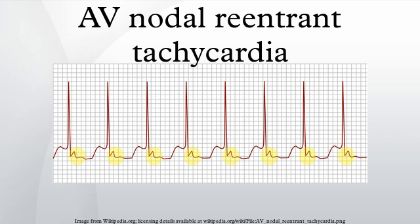AVNRT occurs when a reentry circuit forms within or just next to the atrioventricular node. The circuit usually involves two anatomical pathways, the fast pathway and the slow pathway, which are both in the right atrium. The slow pathway is located inferior and slightly posterior to the AV node, often following the anterior margin of the coronary sinus. The fast pathway is usually located just superior and posterior to the AV node. These pathways are formed from tissue that behaves very much like the AV node, and some authors regard them as part of the AV node.